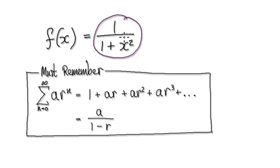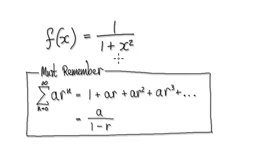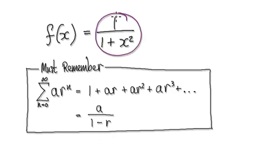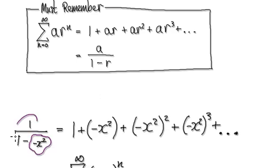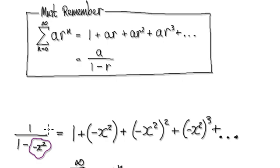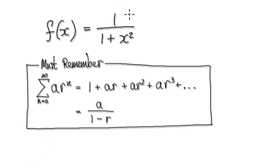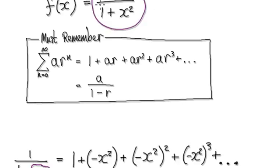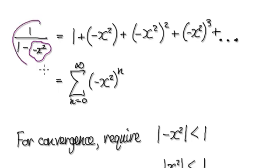To do this, we want to rewrite this in this form. But the problem is this is a positive and this is a negative. So rewrite this as this. Now A here is 1, and your common ratio is this thing here. And you've got a minus here, so rewrite this as this.